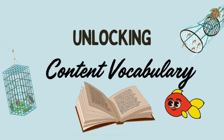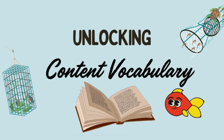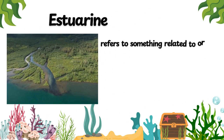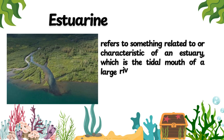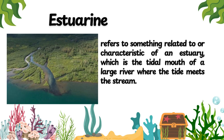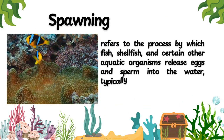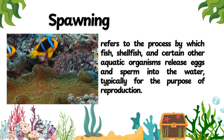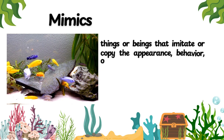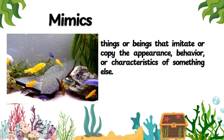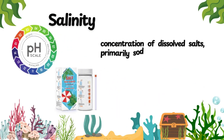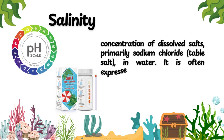Unlocking Content Vocabulary. Estuarine refers to something related to or characteristic of an estuary, which is the tidal mouth of a large river where the tide meets the stream. Spawning refers to the process by which fish, shellfish, and certain other aquatic organisms release eggs and sperm into the water, typically for the purpose of reproduction. Mimics: things or beings that imitate or copy the appearance, behavior, or characteristics of something else. Salinity: concentration of dissolved salts, primarily sodium chloride (table salt), in water.